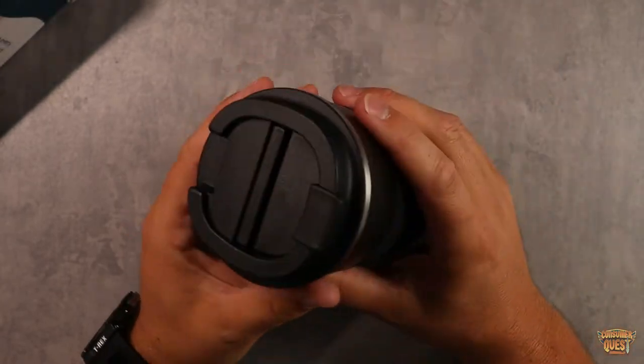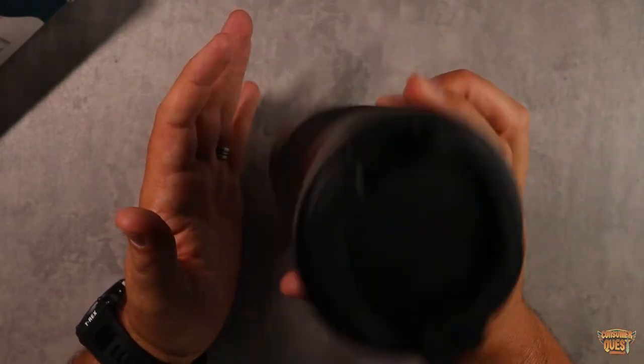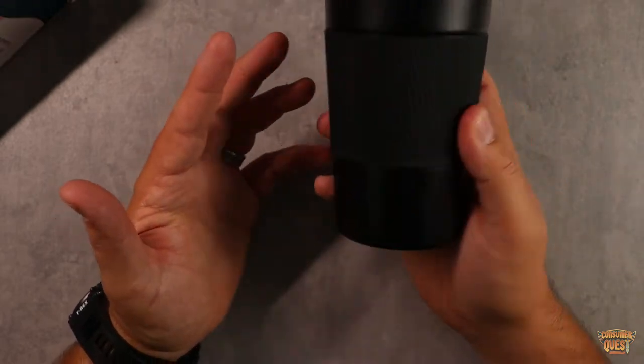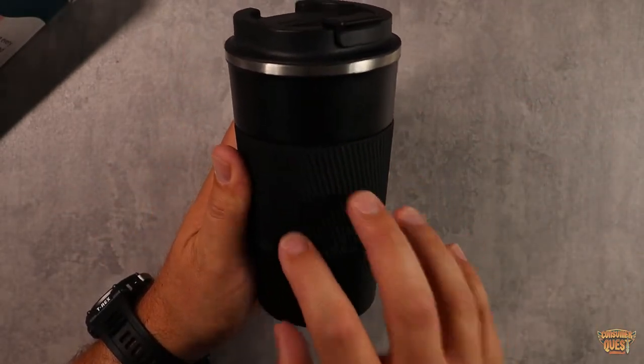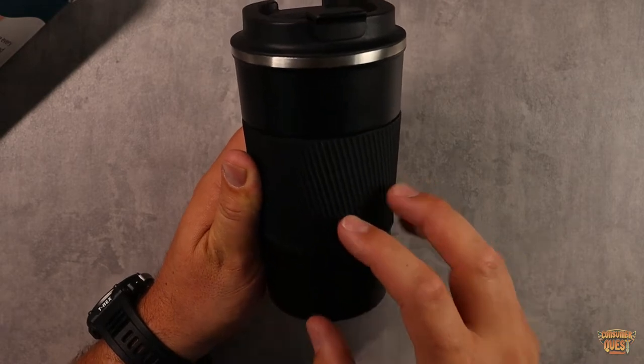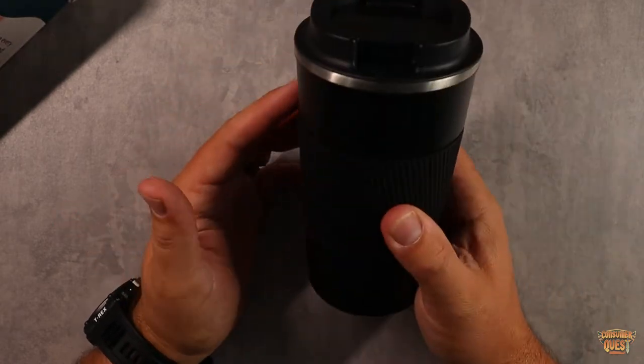Having that rubberized outer coating is going to help keep it from getting super hot when you're trying to drink it, when you're talking about hot beverages. But this also keeps things cold. Now this can do warm up to six hours and it can keep things cold up to 12 hours, so very convenient.